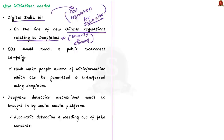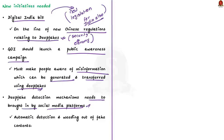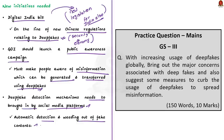The author is of the opinion that India should create a separate law to control deepfakes. He quotes China's example — China has introduced regulations prohibiting deepfakes deemed harmful to national security or the national economy, applied to content creators who alter facial or voice data. The author wants India to issue similar regulations. The proposed Digital India Bill should include provisions regarding deepfakes. Additionally, the Indian government needs to launch a public awareness campaign so people are aware of misinformation that can be generated using deepfakes. Deepfake detection mechanisms also need to be brought in by social media platforms, with automatic detection and weeding out of fake content prioritized.